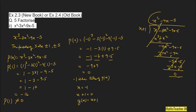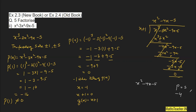Now we split the quotient — the quadratic x² − 4x − 5 — using the splitting the middle term method. The coefficient of x² is 1, and the constant term is −5. Multiply them: 1 × 5 = 5. We need two numbers whose product is 5 and whose difference is 4. Those numbers are 5 and 1. Since the sign before the constant is minus, we write: x² − 5x + x − 5.